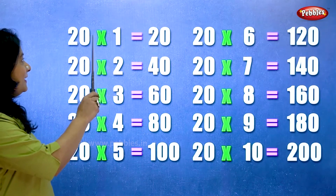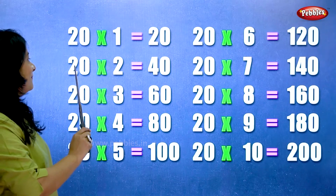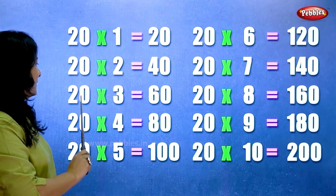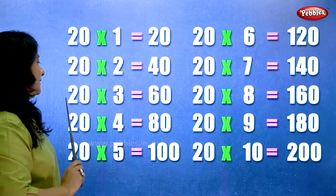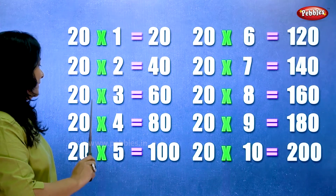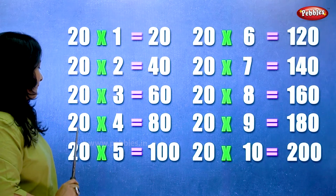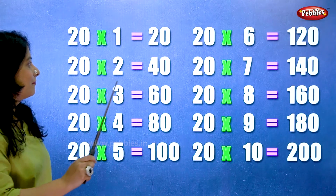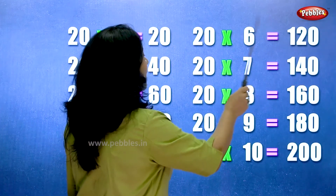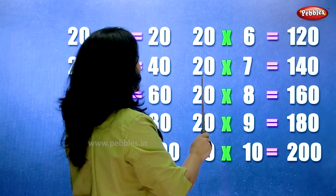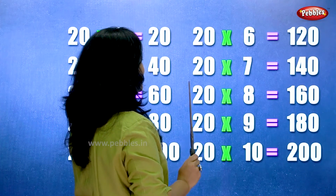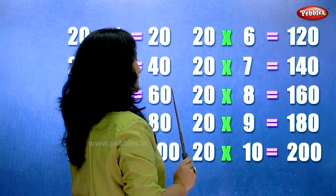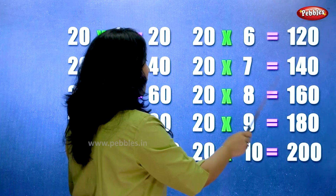20 ones are 20. 20 twos are 40. 20 threes are 60. 20 fours are 80. 20 fives are 100. 20 sixes are 120. 20 sevens are 140. 20 eights are 160. 20 nines are 180. 20 tens are 200.